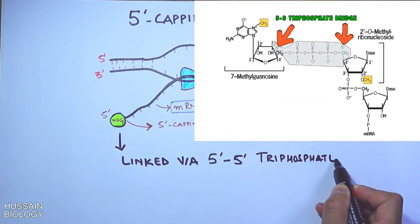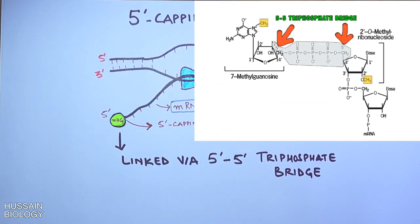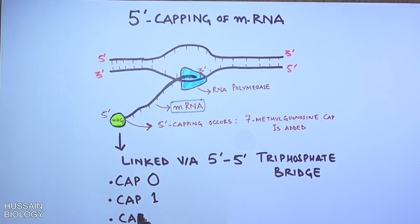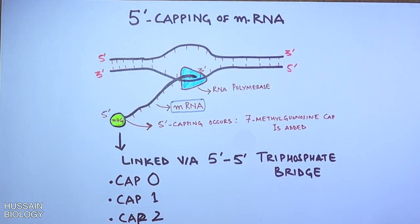This 5 prime cap is linked by a 5-5 triphosphate bridge and we have three different caps for the 5 prime end: cap 0, cap 1, and cap 2. These caps will be discussed in detail later in this video.